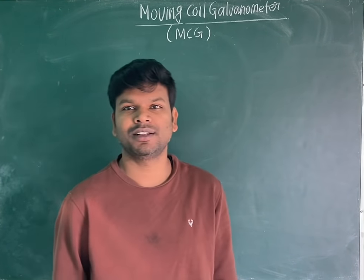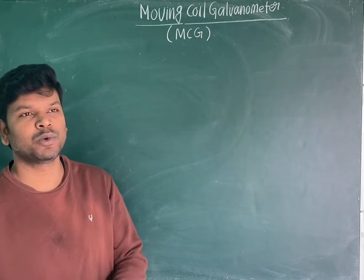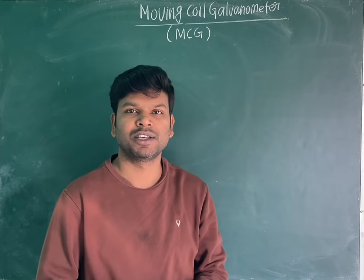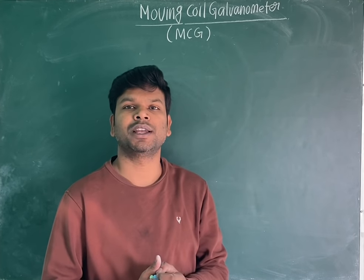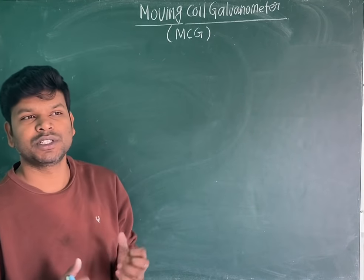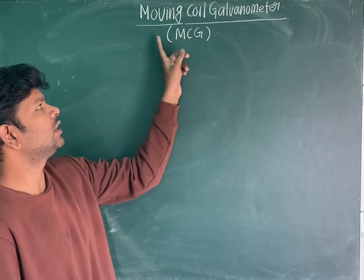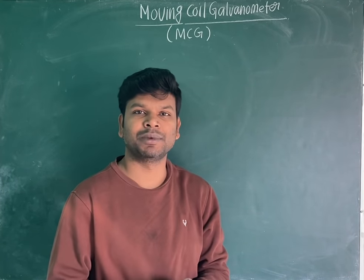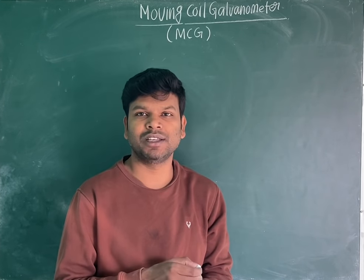Welcome students. Today in this video we are going to study about the moving coil galvanometer. Moving coil galvanometer is a highly sensitive device which is used to measure very small values of current and its direction in a particular electrical network. In this video we will study the complete theory of moving coil galvanometer and also see how a galvanometer can be converted into a voltmeter.